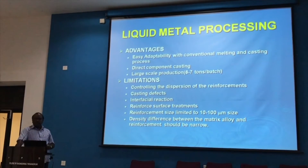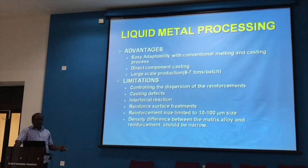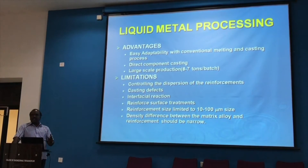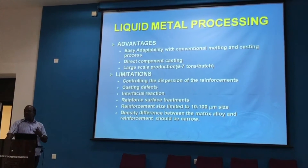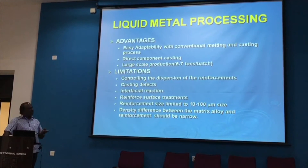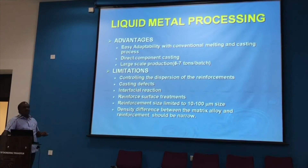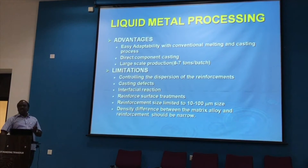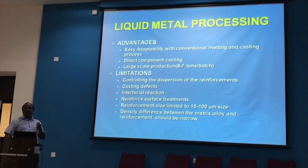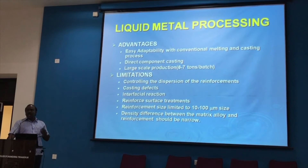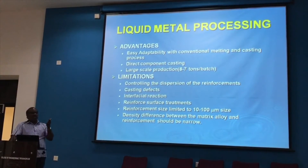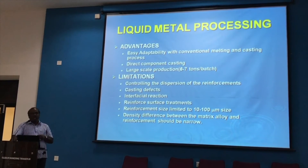Another limitation is casting defects. When any metal is poured into a die, shrinkage porosity and gas porosity normally occur, and these must be controlled through degassing treatments. However, composites cannot be degassed the same way as pure alloys. Normally hexachloride is used, but if added to a composite, the chlorine will coat the particles and cause them to rise. Only hydrogen degassing can be used in this case.